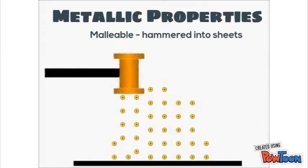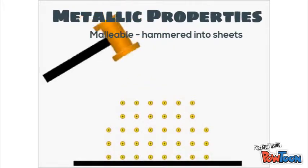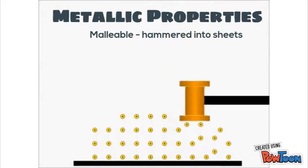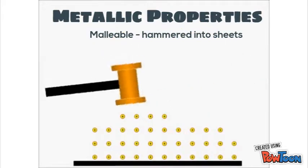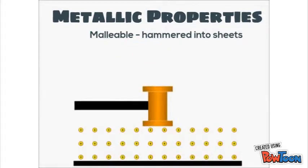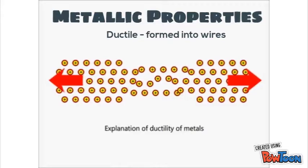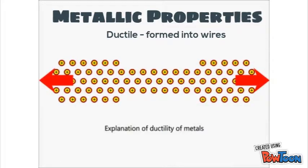Properties include malleability, so it can be hammered into sheets. You can see here where the metal cations are able to shift in their formation because the electrons are not fixed to a certain cation. The second property is ductility, where metals can be formed into wires — because those electrons can move, it allows the cations to deform.